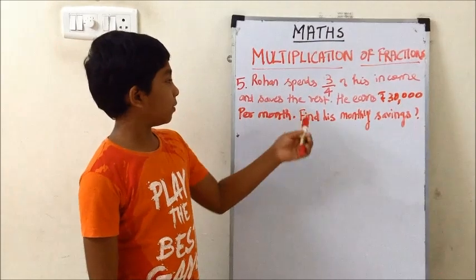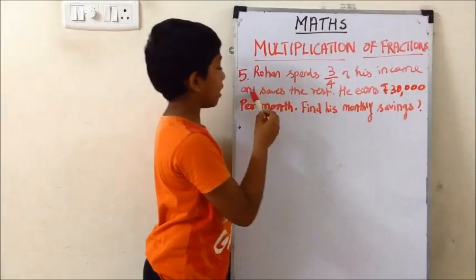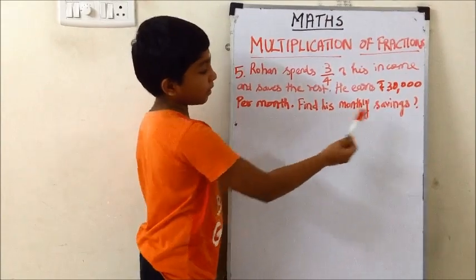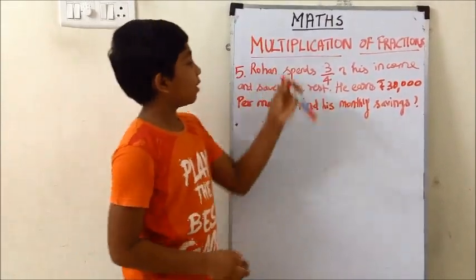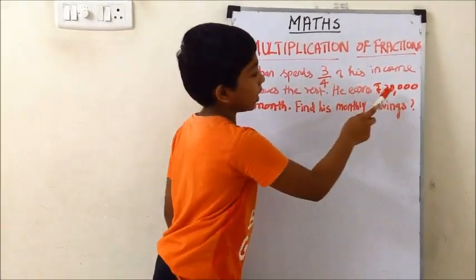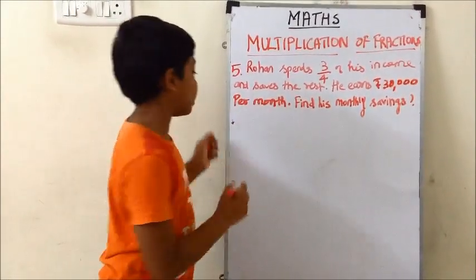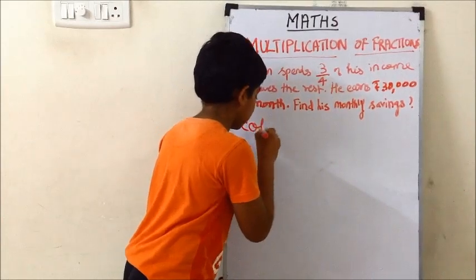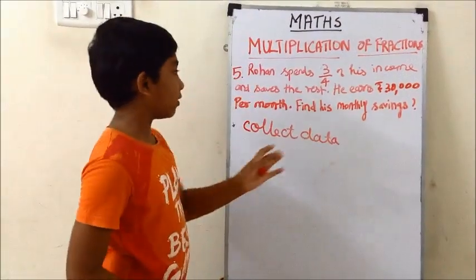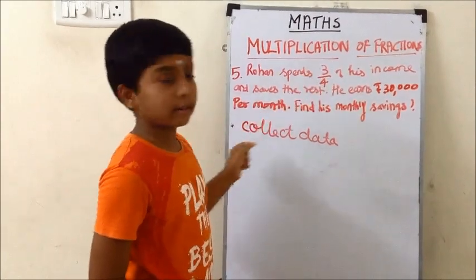Now I have a word problem. Rohan spends 3/4 of his income and saves the rest. He earns 30,000 per month. Find his monthly savings. For a word problem, first we need to collect data. The data we have is: he earns 30,000 and he spends 3/4 of his income.